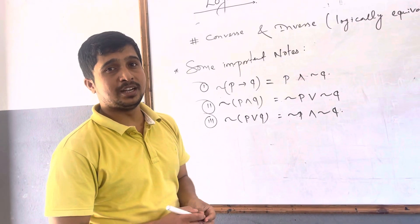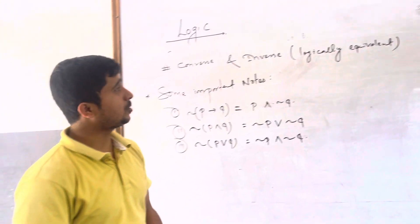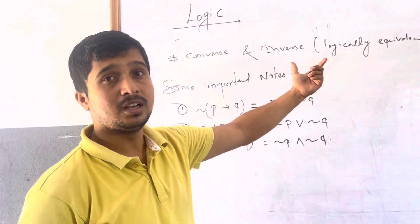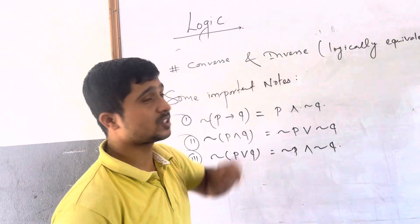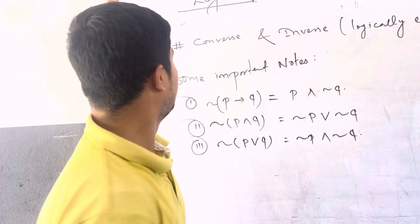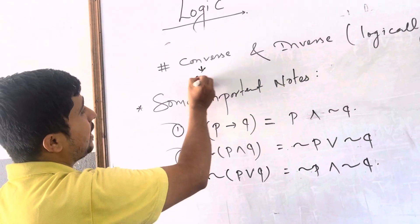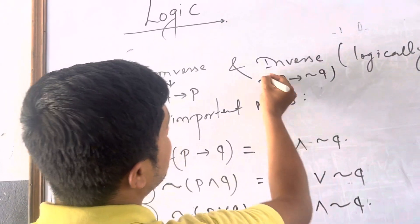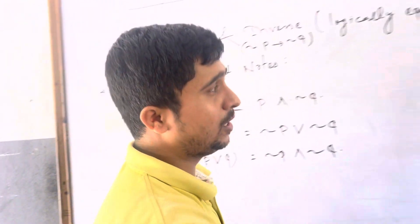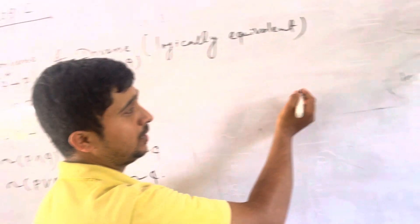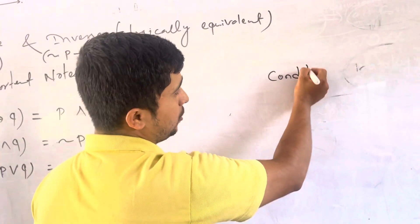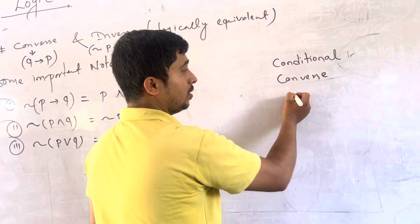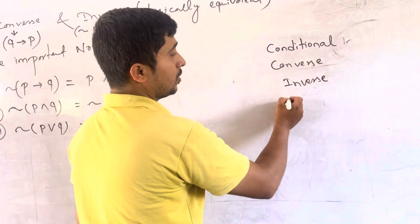Now we are going to look at the conditional and related terms using a truth table. There are four related things: Conditional is P then Q. Converse is Q then P. Inverse is negation P then negation Q. Contrapositive is negation Q then negation P.